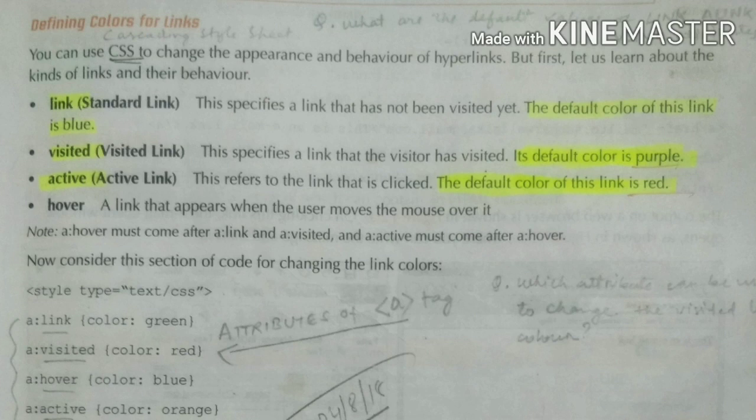The next part is defining color for links. You can use CSS to change the appearance and behavior of hyperlinks. CSS stands for Cascading Style Sheet, which is used to change the appearance and behavior of the hyperlink. But for now, we will be discussing the kinds of links.